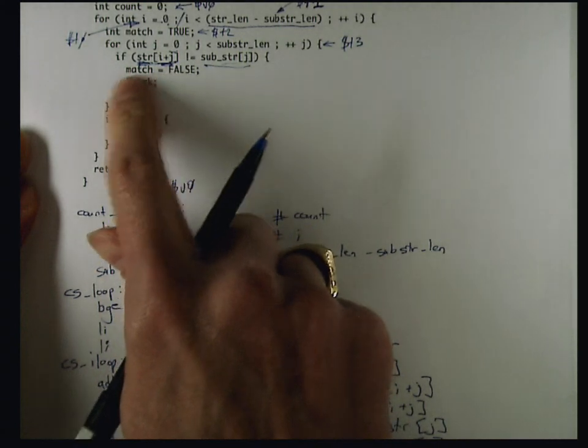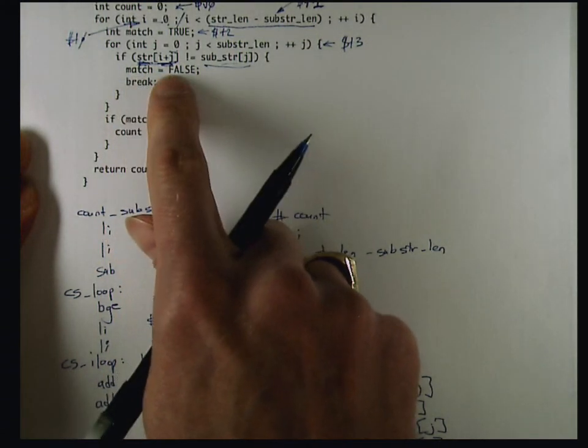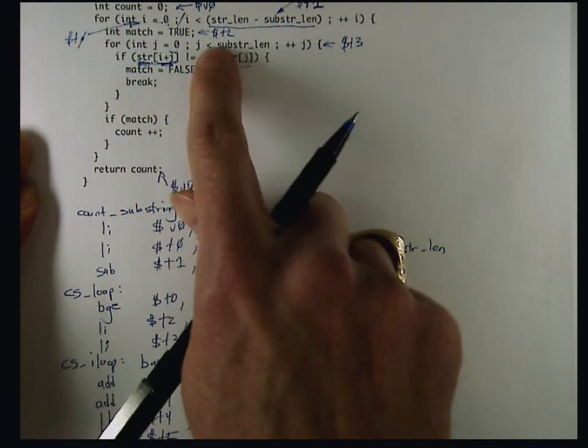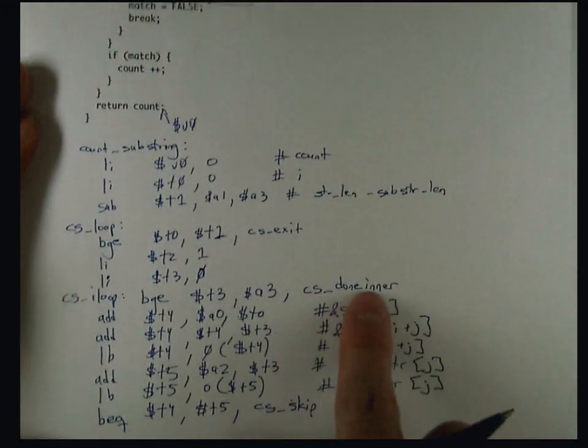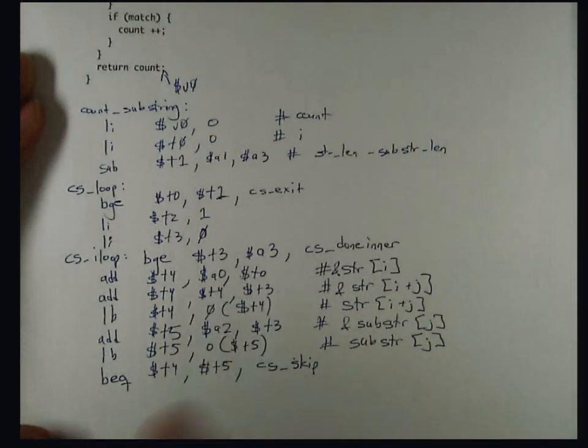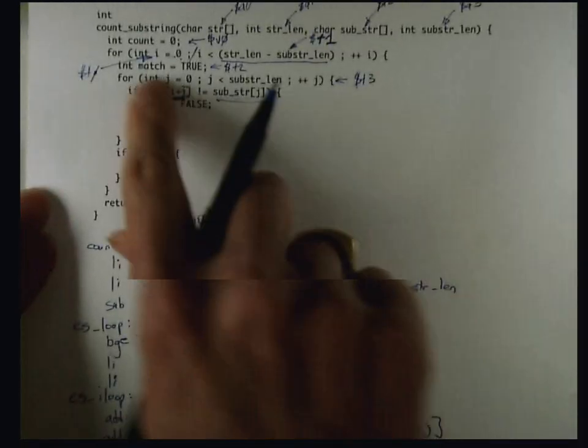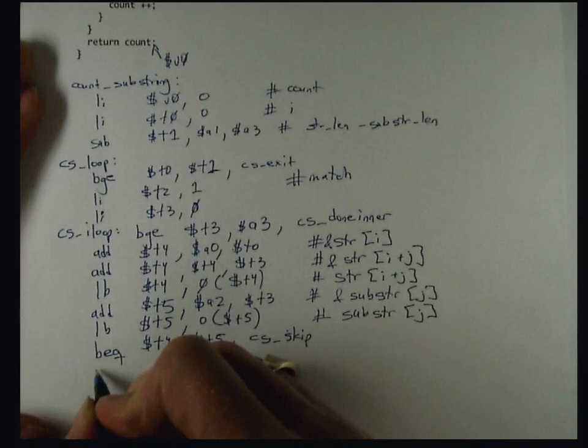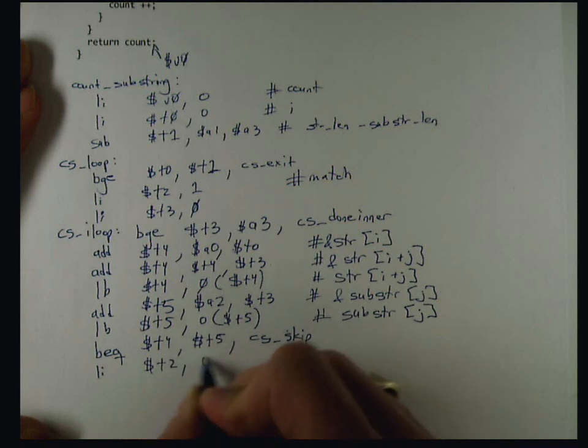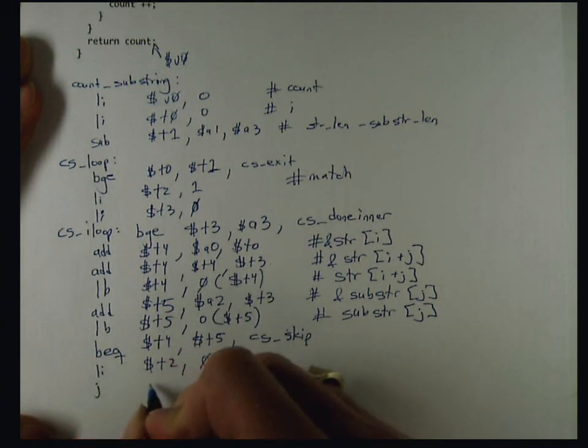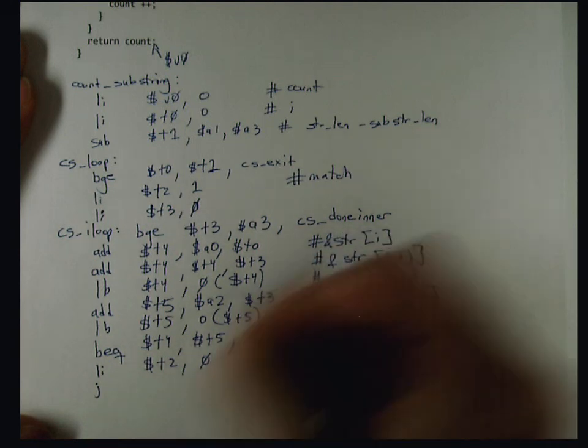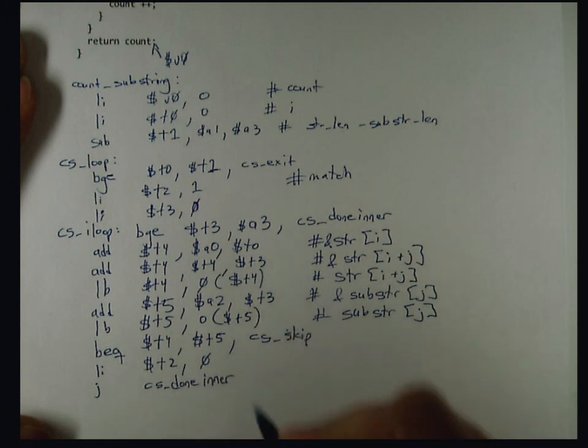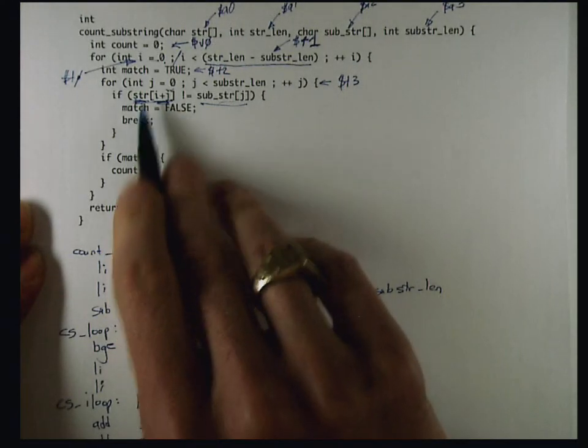Otherwise, I need to set match to zero and break, and the break is going to go to the same place that this condition would, and we already called that CS done inner. So to set match to false, we said that match was in T2, and so to set that to false, I can do a load immediate of T2 with zero, and then I can do an unconditional jump to CS done inner.